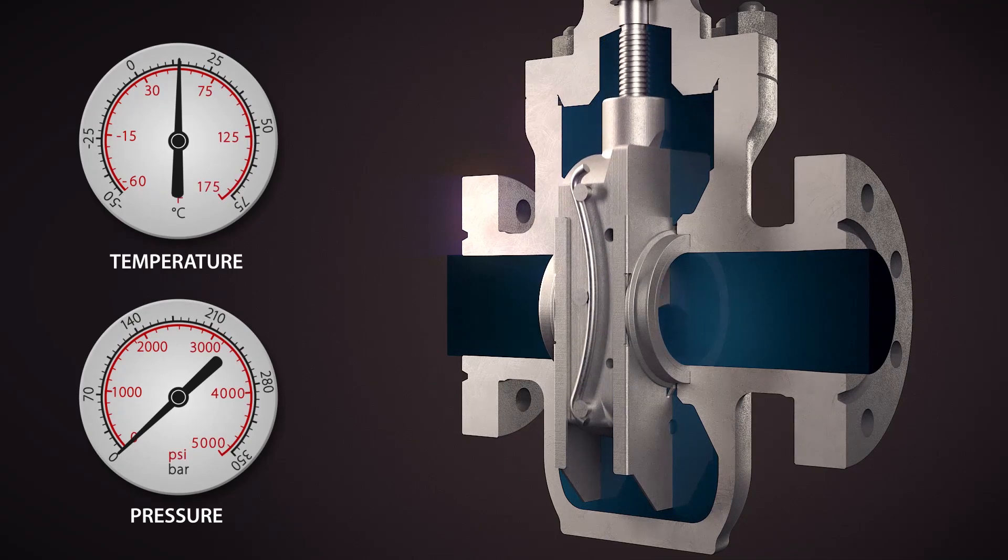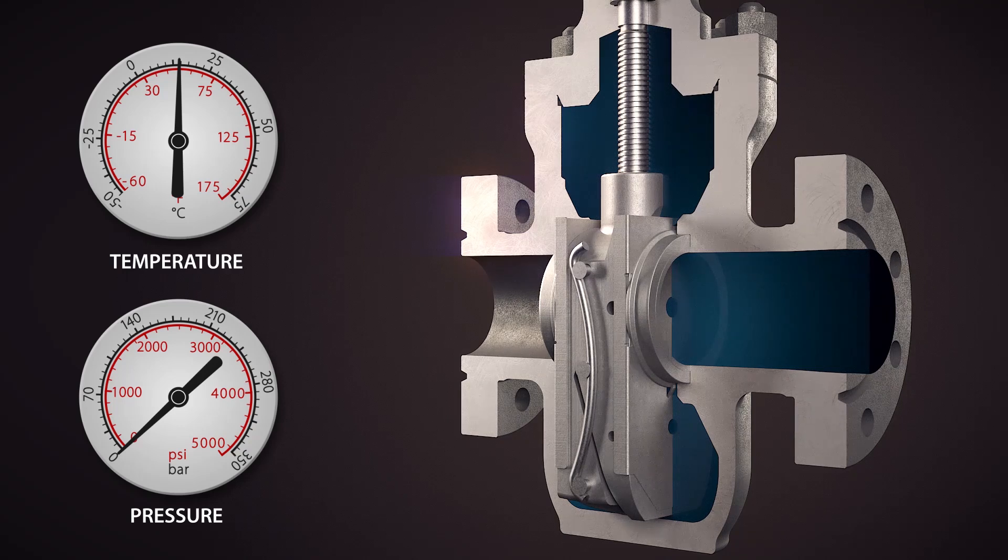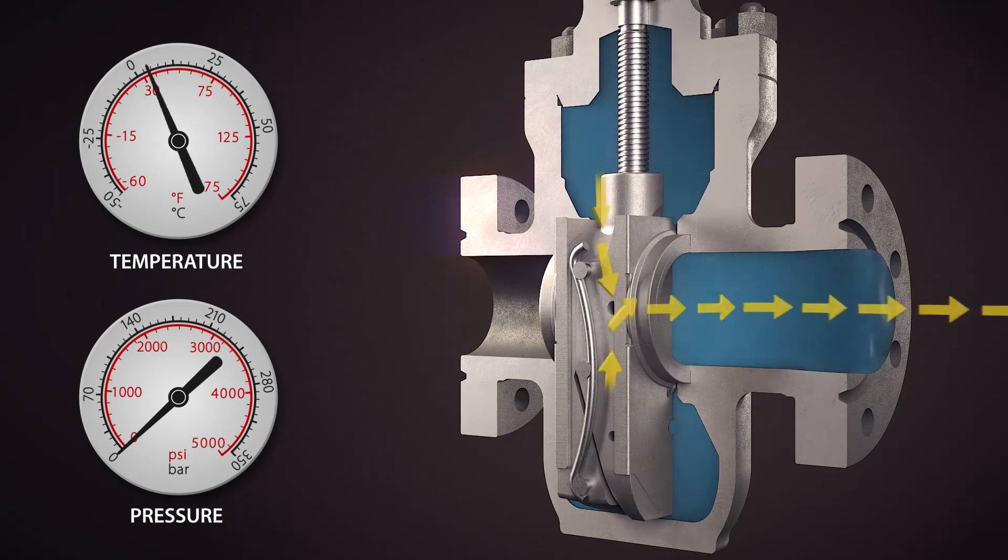Vents in the gate allow expanding fluids to flow into the valve through bore. No pressure is allowed to build up, and the problem of yielding studs is eliminated, and body-to-bonnet integrity is maintained.